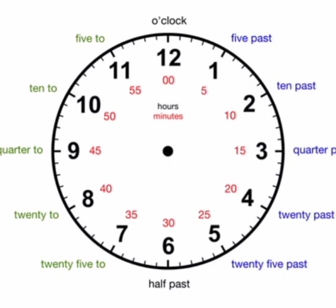Next, reading the time. Time can be read in two ways. See this clock — the minutes on each number: 1 is 5 minutes, 2 is 10 minutes, 3 is 15, 4 is 20, 5 is 25, 6 is 30, 7 is 35, 8 is 40, 9 is 45, 10 is 50, 11 is 55.